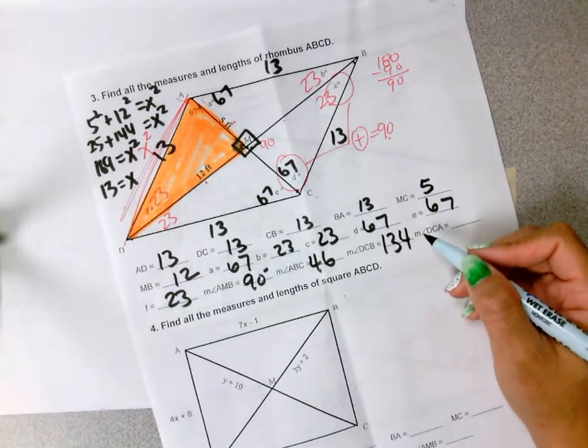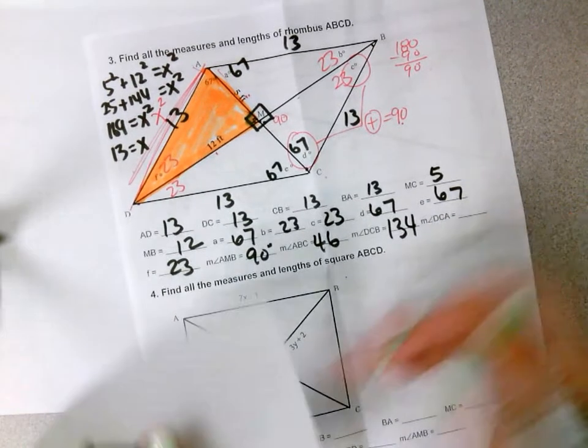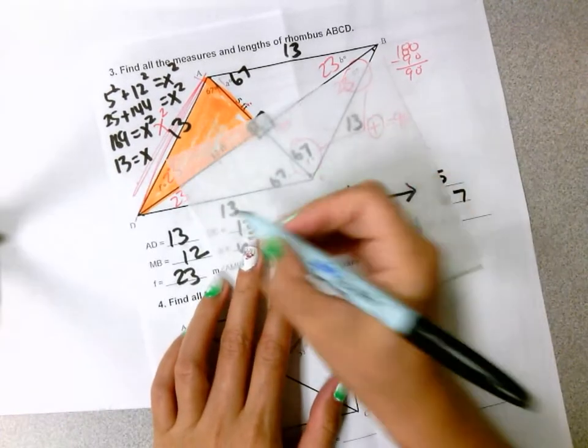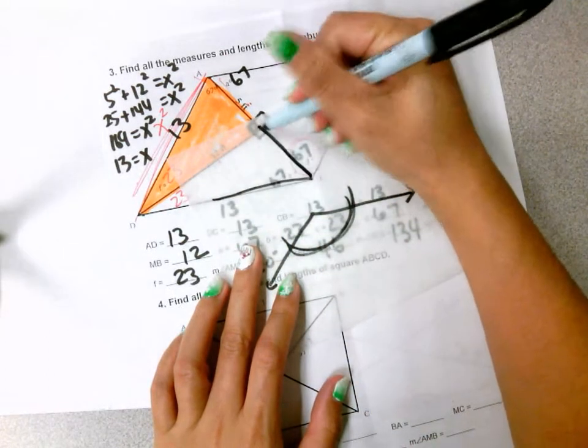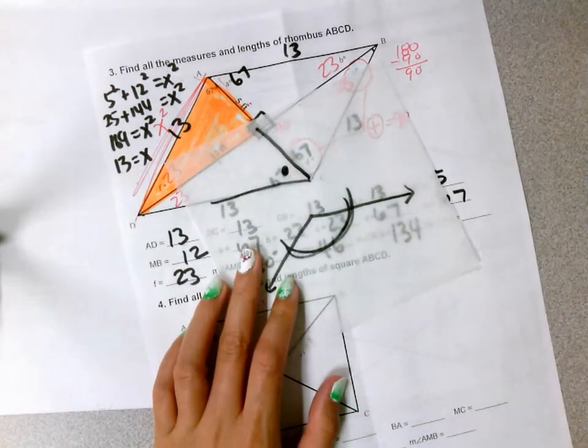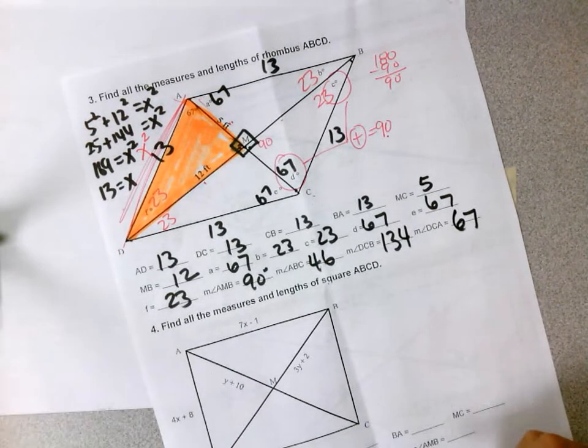Alright, D, C, A is next. D, C, and A, so I can maybe use this one, D to C, it's right here. To A is up there, so it's this angle, that would be 67. Alright, so done.